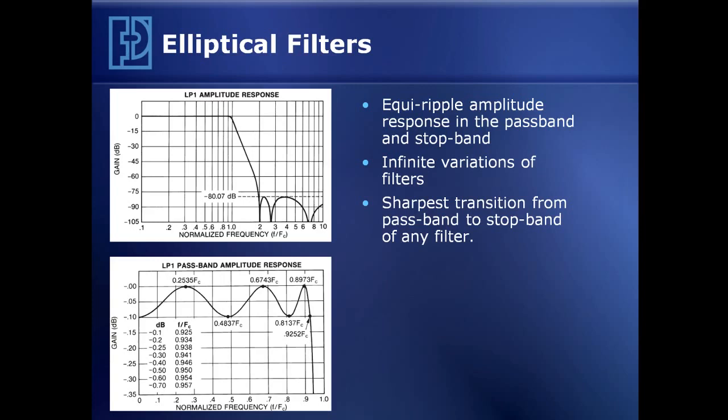Elliptic filters have equiripple amplitude response in both the passband and the stopband. As a designer, you can specify the precise amount of passband ripple and the amount of stopband attenuation you want. A unique filter characteristic is then defined by those parameters given the number of poles. Elliptic filters have the sharpest transition from passband to stopband of any filter.